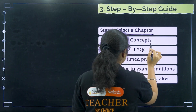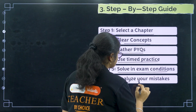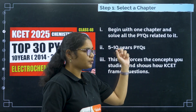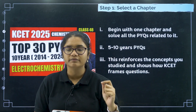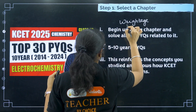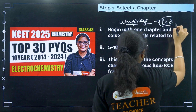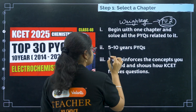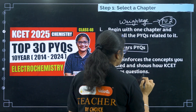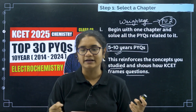Step one is to select a chapter. Begin with the chapter and solve the PYQs related to it. You need to select the chapter based on weightage — first choose those chapters which have high weightage. For KSA, all PU2 chapters are very important, so you must at least complete the previous year questions of PU2 chapters. You should do at least five to ten years of PYQs based on available time — if you have enough time, go for ten years. This helps you understand the concept and shows how KSA frames questions. You can refer to our channel's ten-year question videos as a resource.